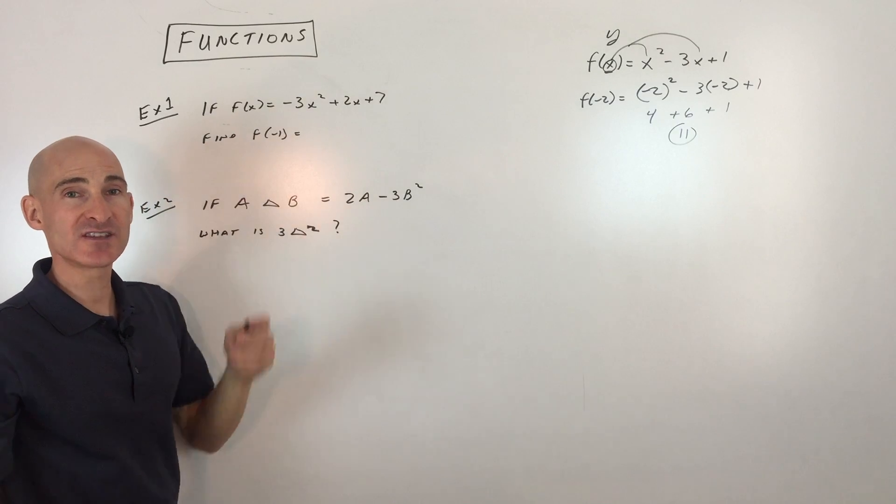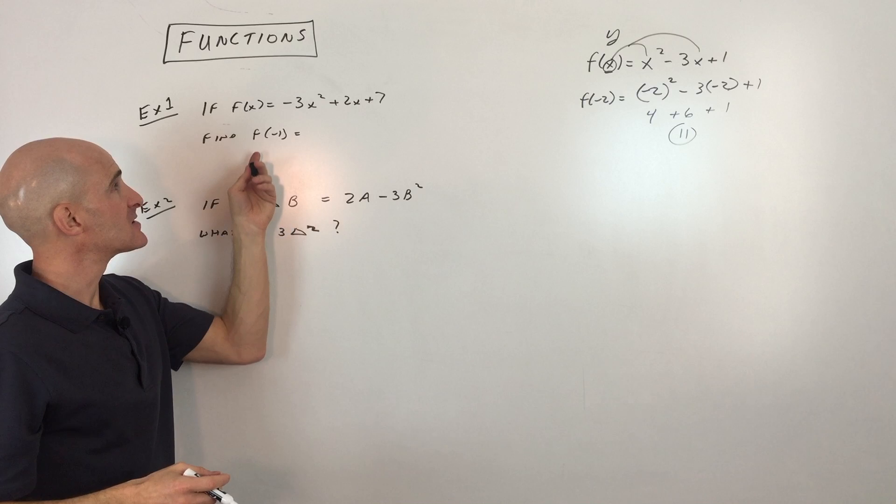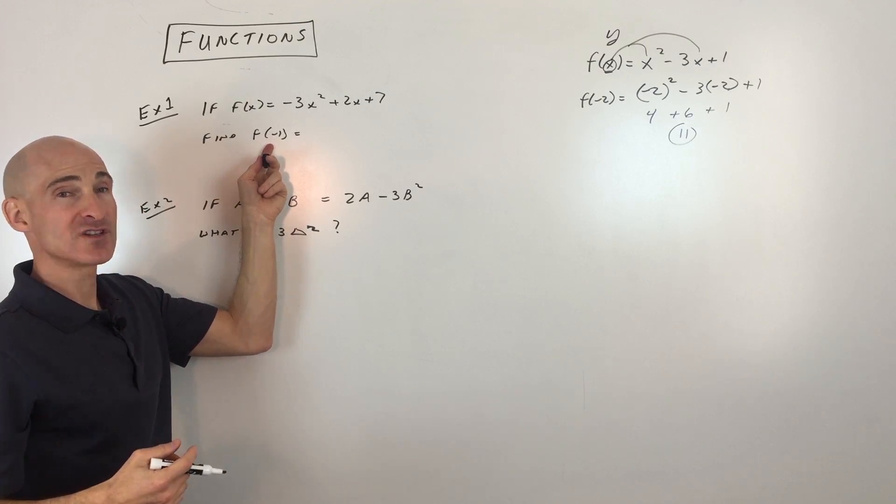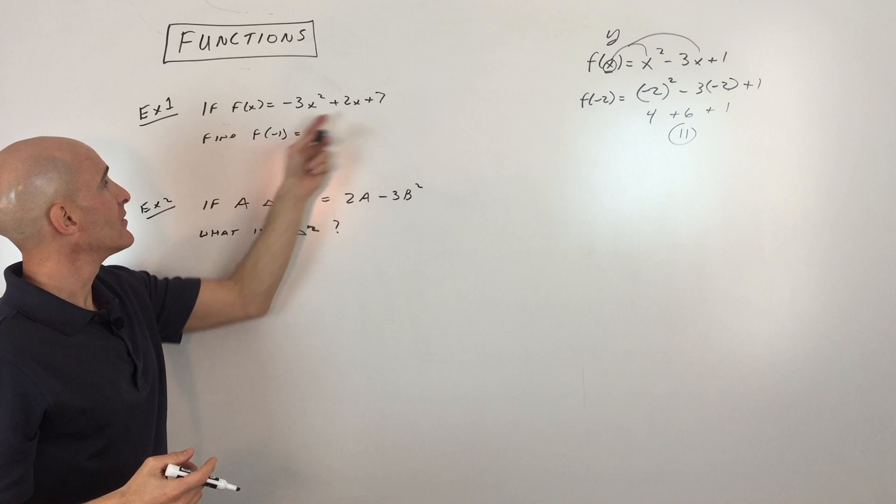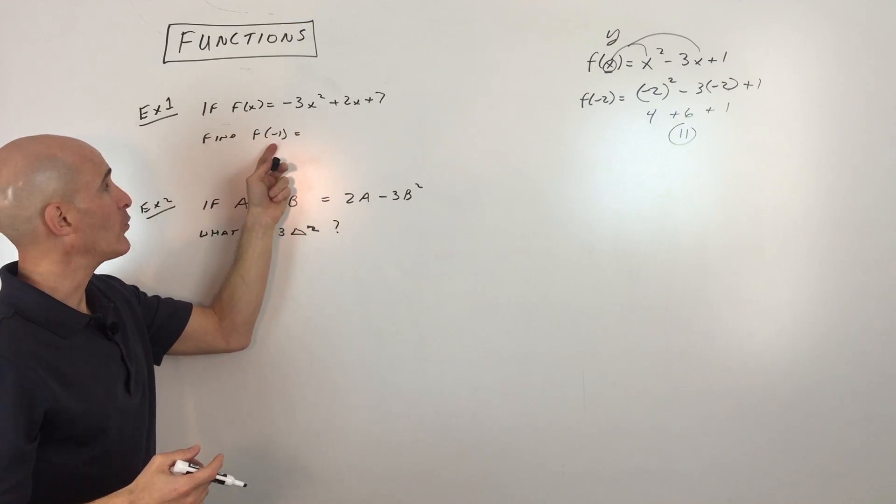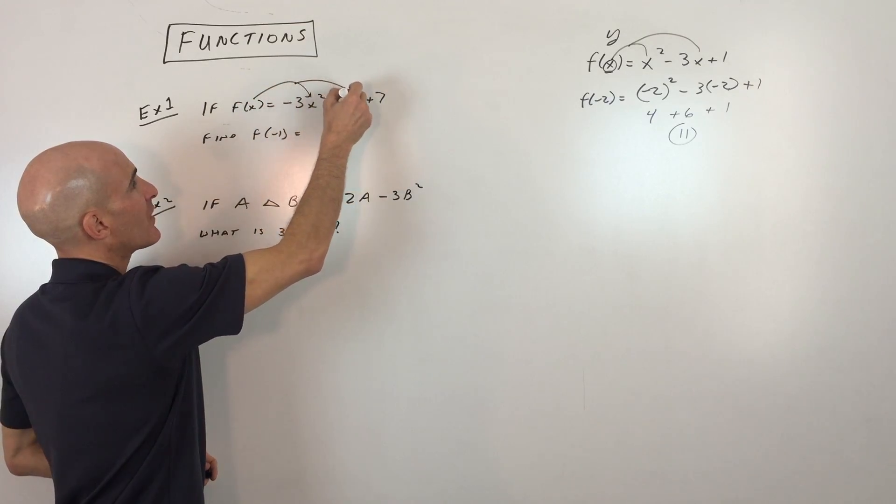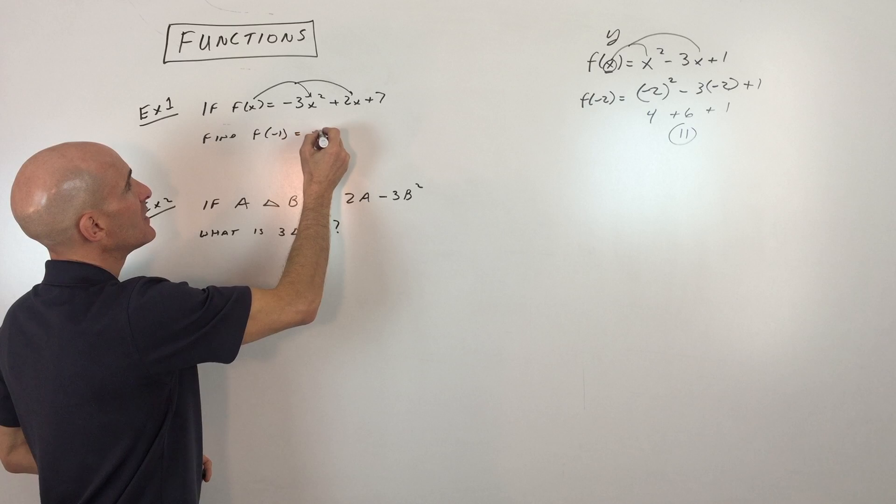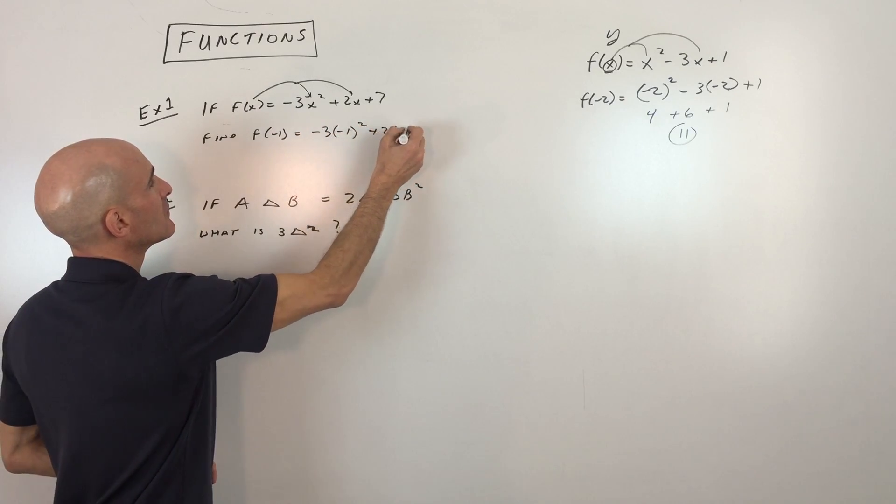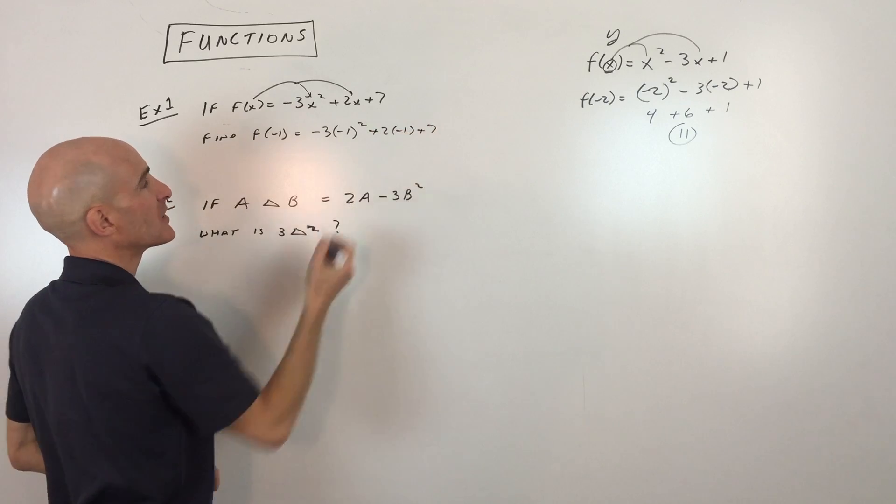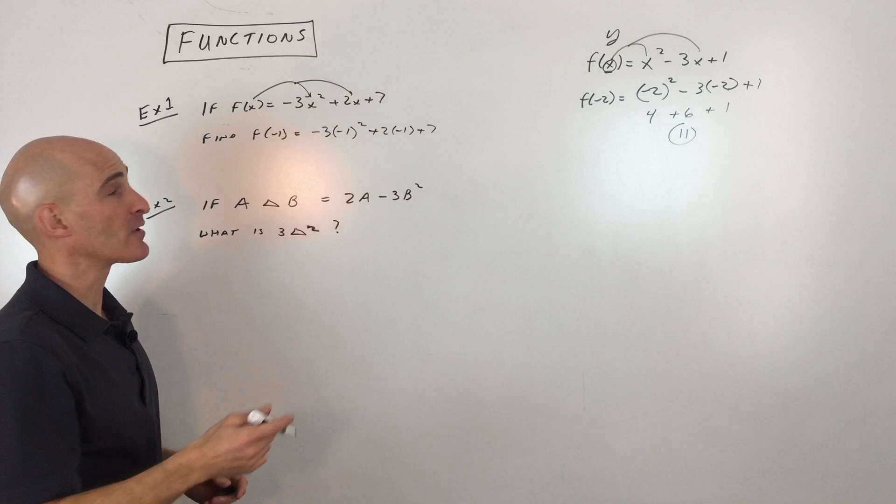Now you can pause the video and try these on your own. I recommend that to get a little bit more benefit from this, but do that and we'll come back and go over it together. So this one, it says if the function here is given, find the f of negative 1. What is f of negative 1? So whatever is in parentheses, that's our x value. We're going to put that in for x on the right. So I'm going to replace x with negative 1.